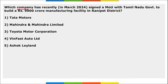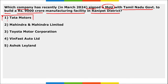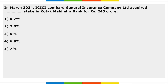Tata Motors recently signed an MoU with the Tamil Nadu government to build a ₹9,000 crore manufacturing facility in Ranipet district, expected to generate more than 5,000 jobs.